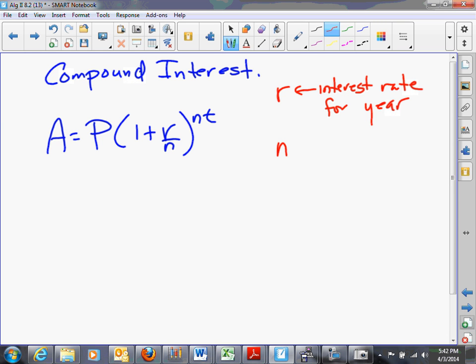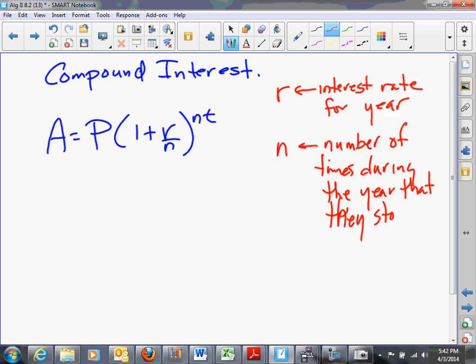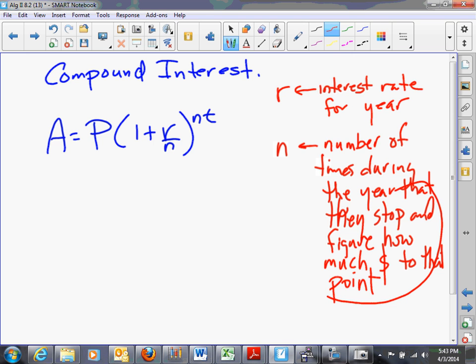Now, n is going to be the number of times during the year that they stop and figure out how much money you've earned to that point and then put it in your account. Now, this is called, when they stop and figure out how much money you've earned and put it in your account, this is called a compounding period, because what they're doing is they're, at that point, they're giving you the interest your account has earned to that point, and then it, too, starts to earn interest.